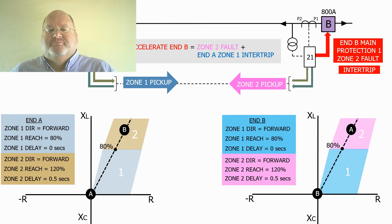This is a very simple example of how we can use a communication system between the two ends to speed up the clearance of the feeder fault across its full length. But it shows how powerful the use of impedance relays with intertripping can be in identifying the precise location of the fault.